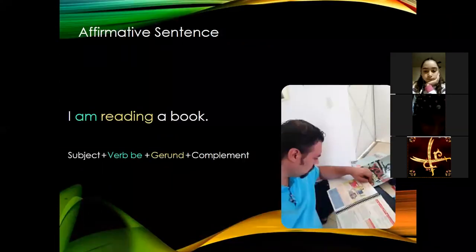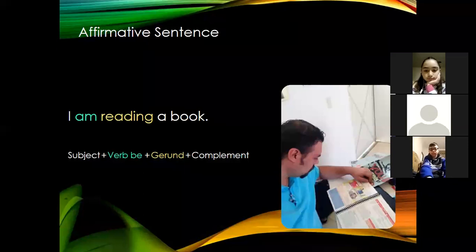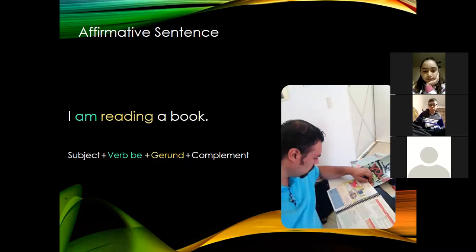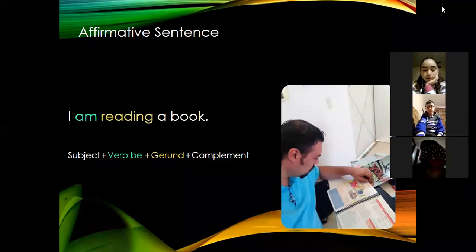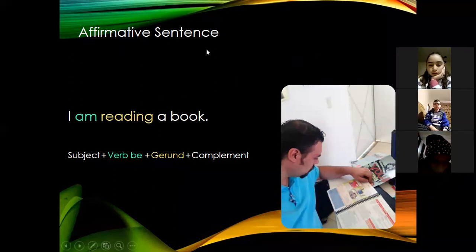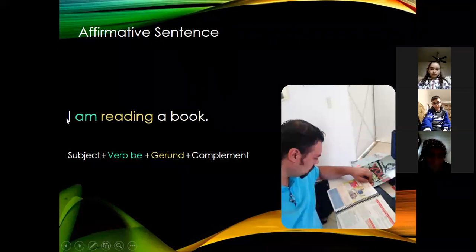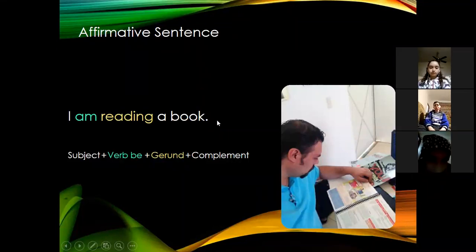Now let us move to the form of the present progressive tense. First, the affirmative sentence — the regular statement. Let's take an example: look at the picture. The sentence is 'I am reading a book.' What is he doing right now? He is telling us he is reading a book.